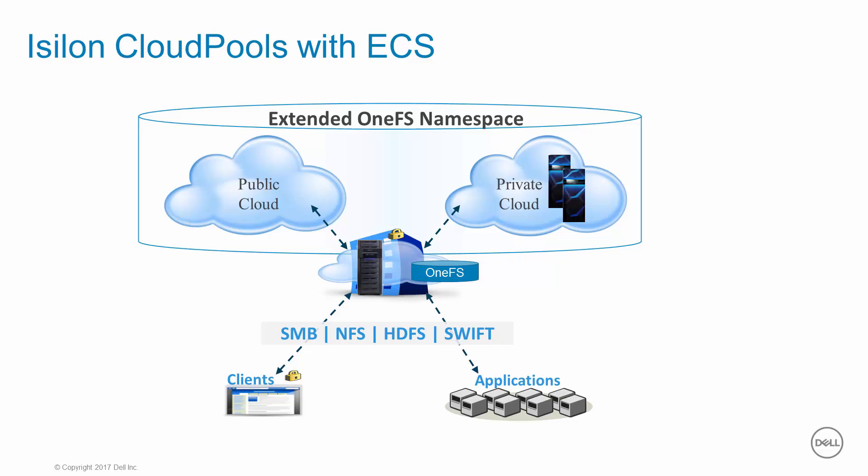In this video, we will describe how the archive process to an ECS cloud target works and then see it on a live system. We will also walk through accessing the archive data to show that it is fully transparent to users and applications.